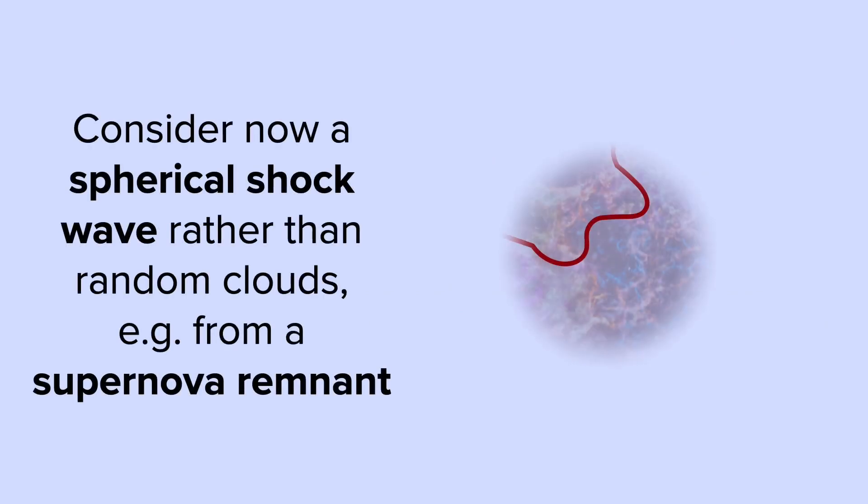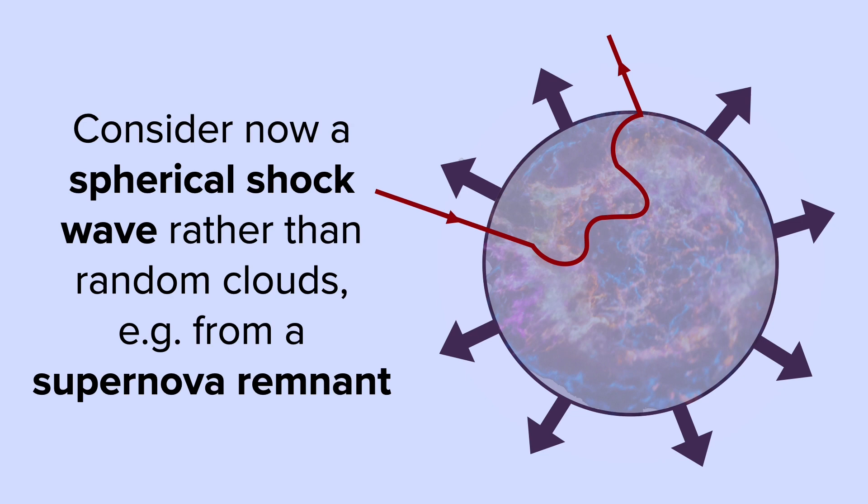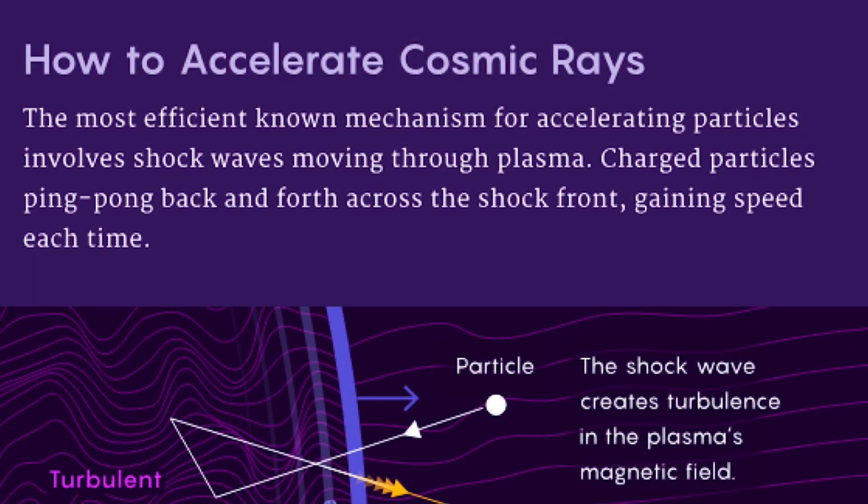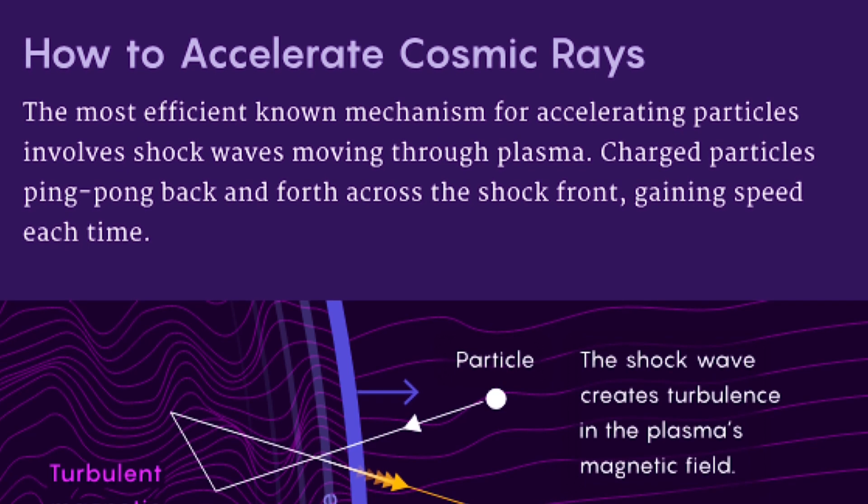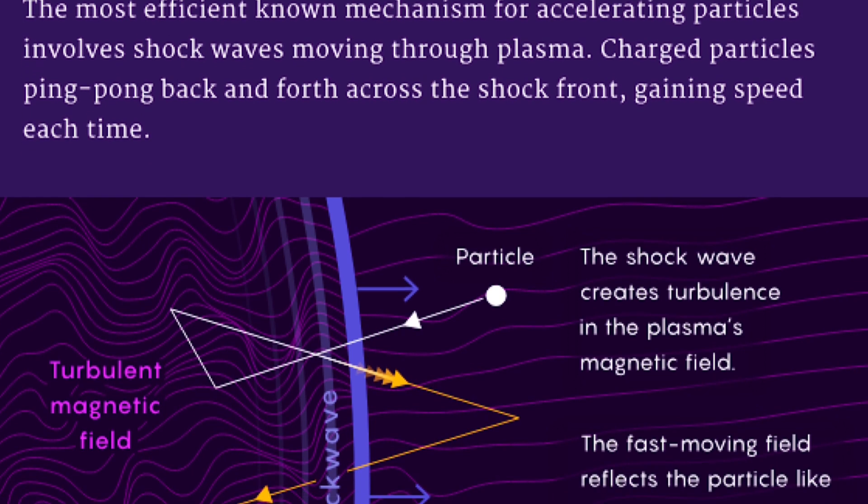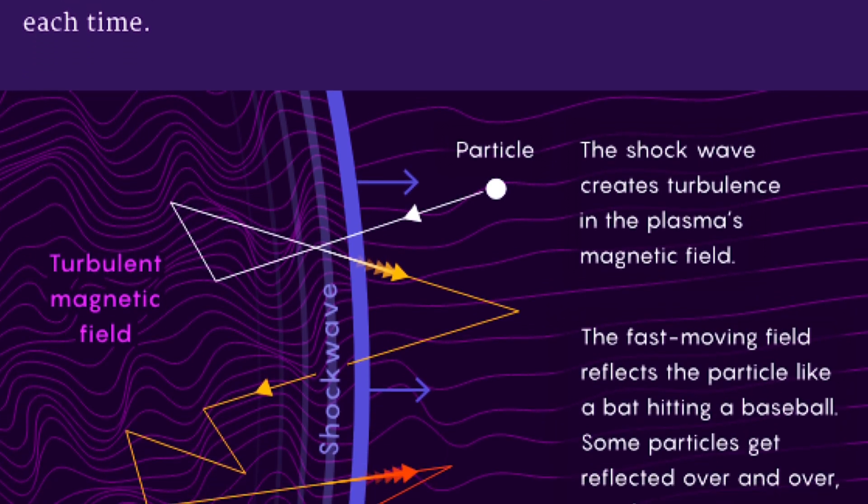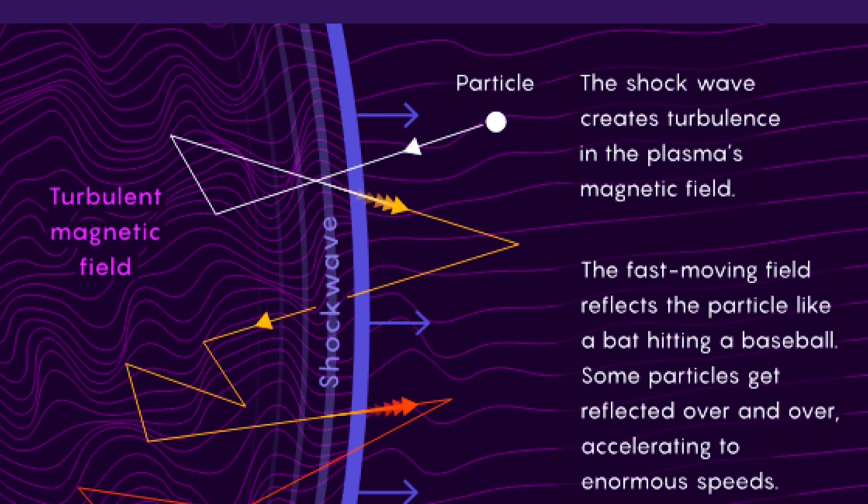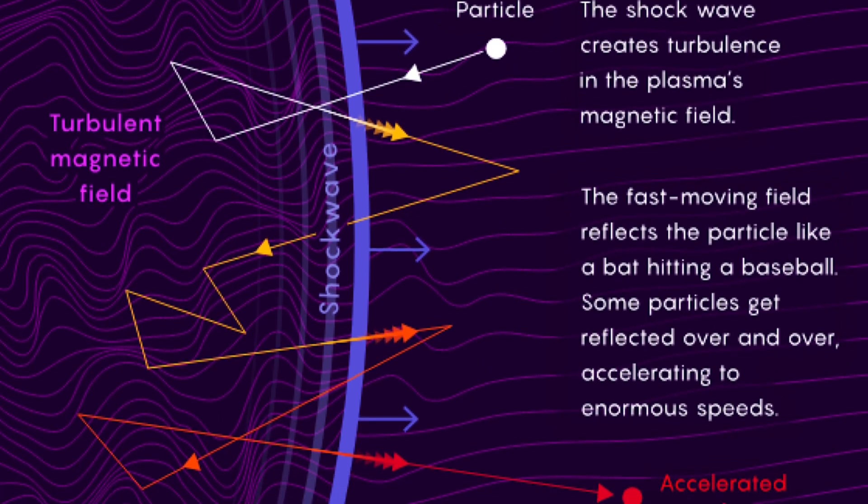Let's consider now a spherical shockwave rather than random clouds. For example, from a supernova remnant. How would cosmic rays get accelerated? The most efficient known mechanism for accelerating particles involves shockwaves moving through plasma. Charged particles ping-pong back and forth across the shock front, gaining speed each time. The shockwave creates turbulence in the plasma's magnetic field. The fast-moving field reflects the particle like a bat hitting a baseball. Some particles get reflected over and over, accelerating to enormous speeds.